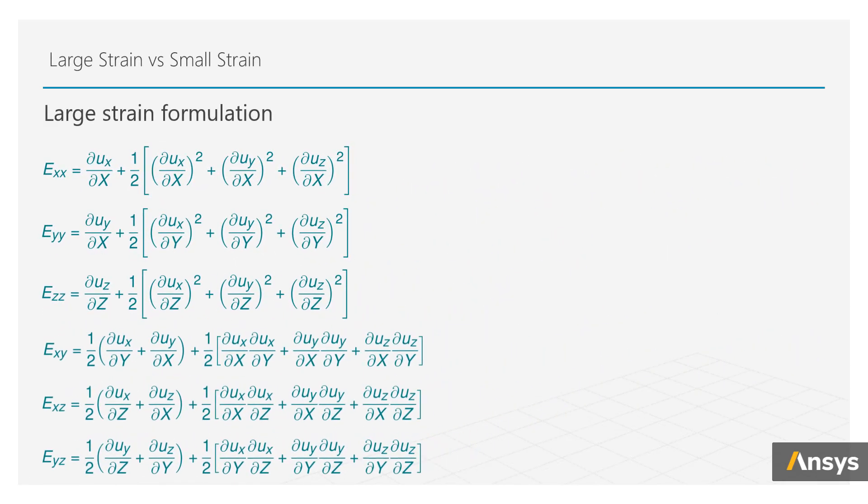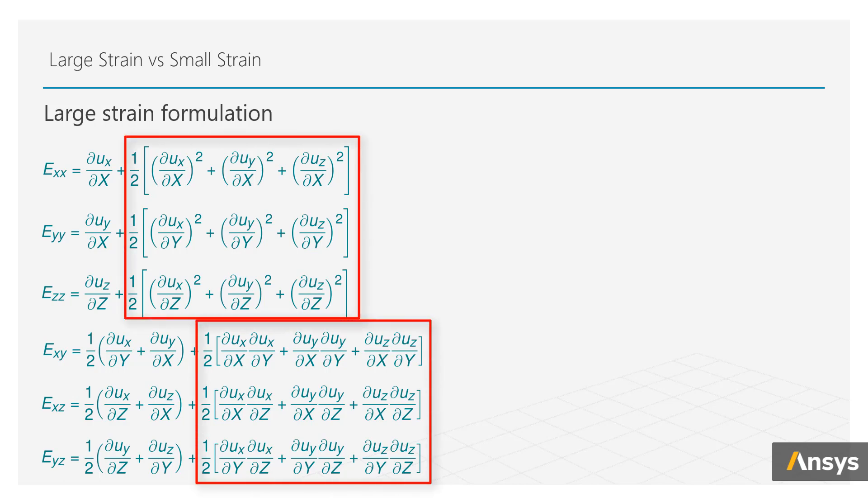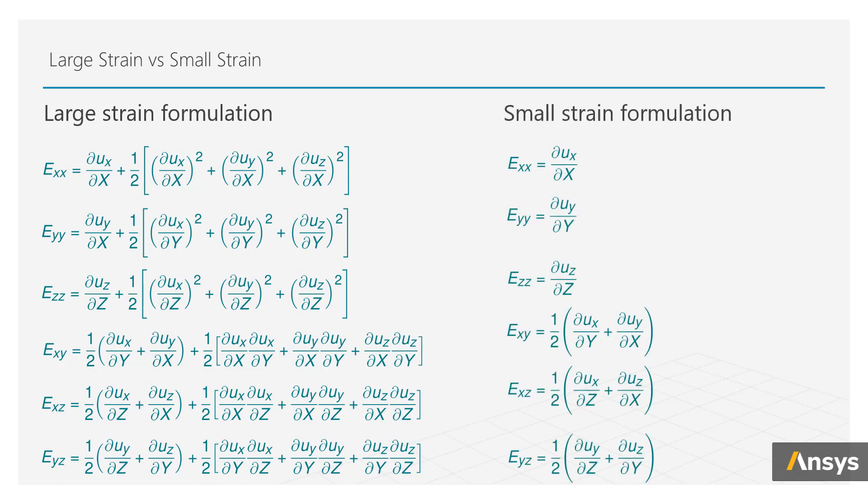When the deformations are very small, the derivatives of the displacements will be small, and when we square these terms, they get even smaller to an extent where they are negligible. If we ignore these terms, we can reduce the strain tensor to just the linear terms, so they can take a linear form.